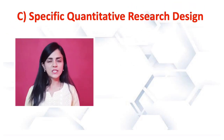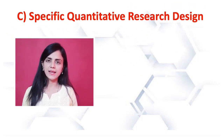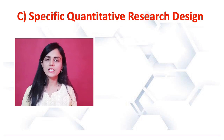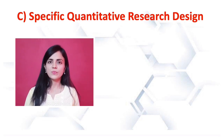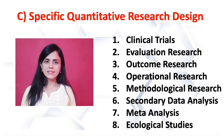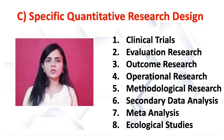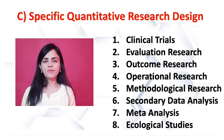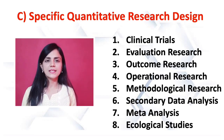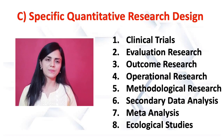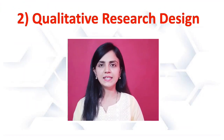Next is specific quantitative research designs. In this category: first is clinical trials; second is evaluation research designs; third is outcome research; fourth is operational research; fifth is methodological research; sixth is secondary data analysis; seventh is meta-analysis; and eighth is ecological studies.